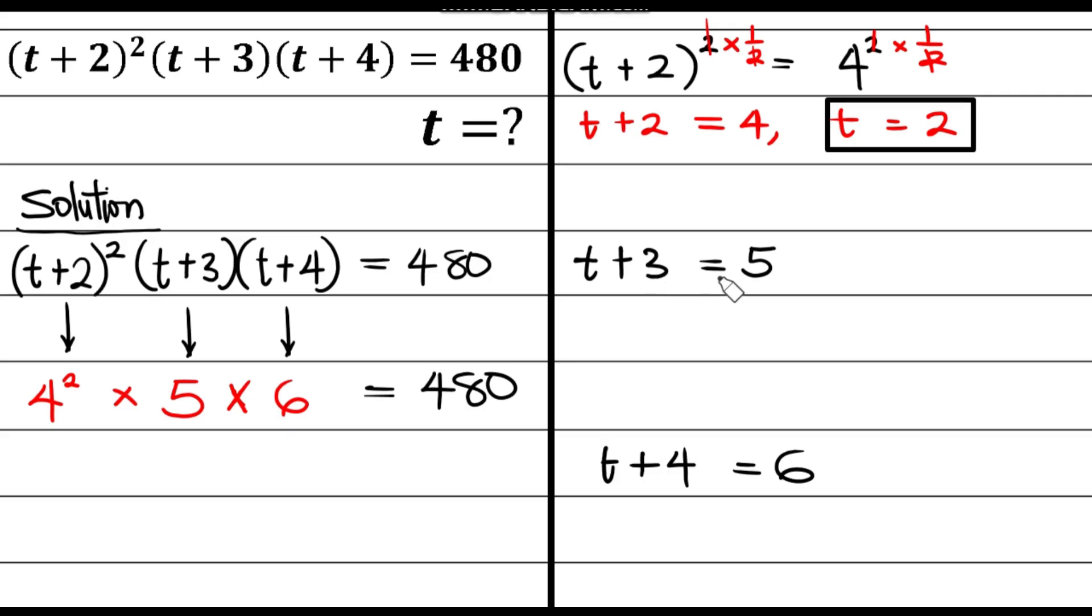And at the same time here, if I subtract 3 from both sides of the equation, I have t equals to 2 also. If I check the last one also, if I subtract 4 from both sides, t is still the same, 2. Therefore, t is definitely 2, my final answer.